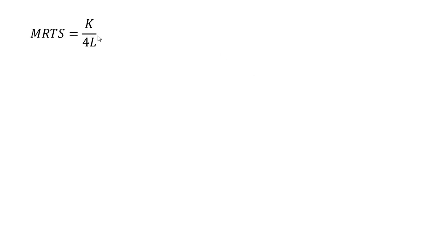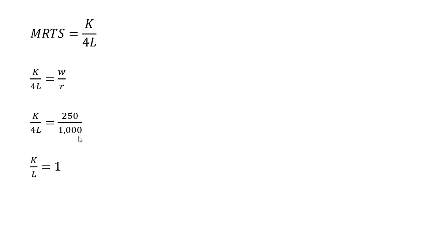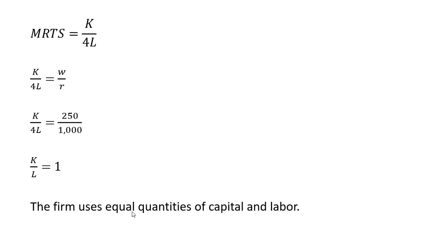Our next step is to set K divided by 4L equal to the wage divided by the price of capital. Putting in our values for the wage and price of capital, and solving for the capital-labor ratio, we multiply through by 4: 4 times 250 is 1,000, and 1,000 divided by 1,000 leaves us with a capital-labor ratio of 1. So the firm uses equal quantities of capital and labor in order to be minimizing costs given this production function and the market input prices.